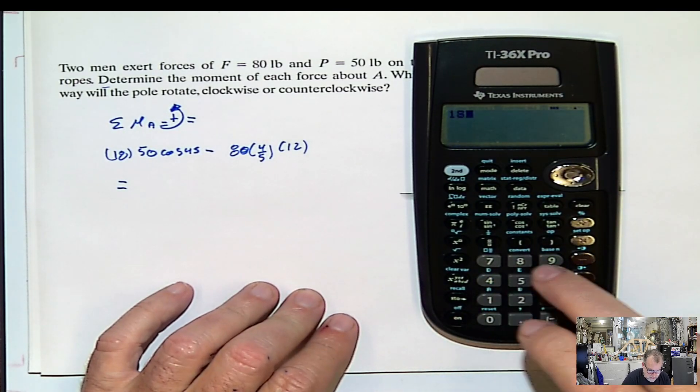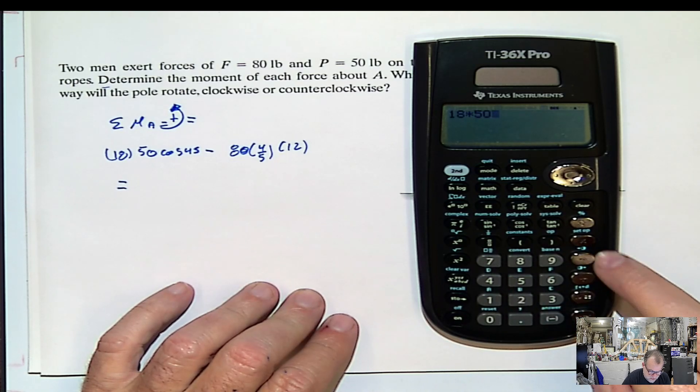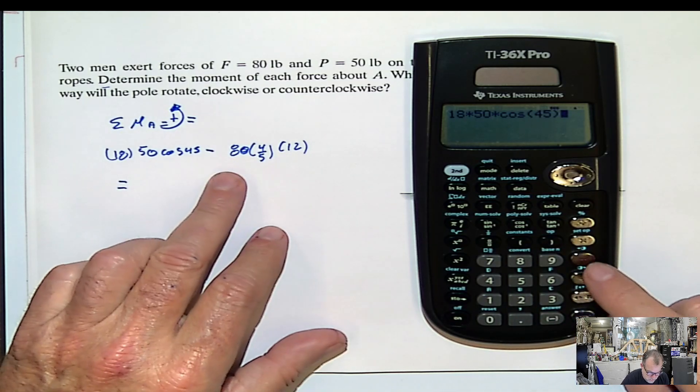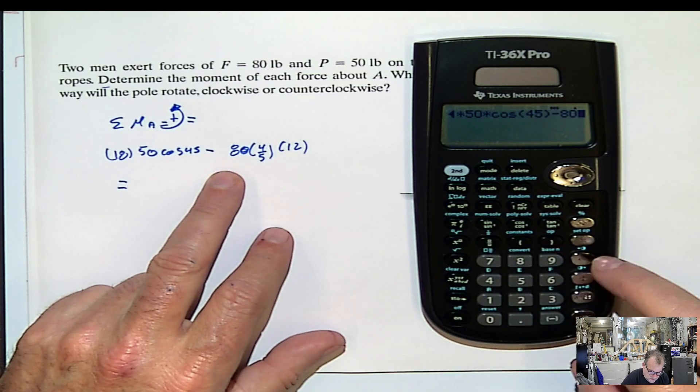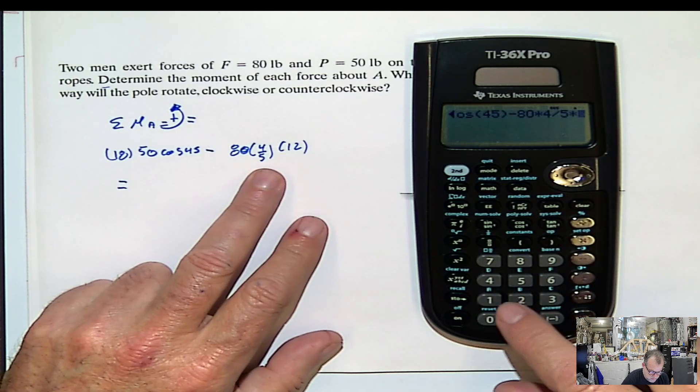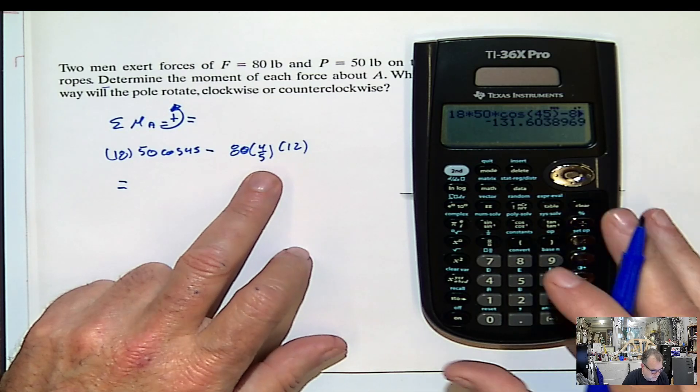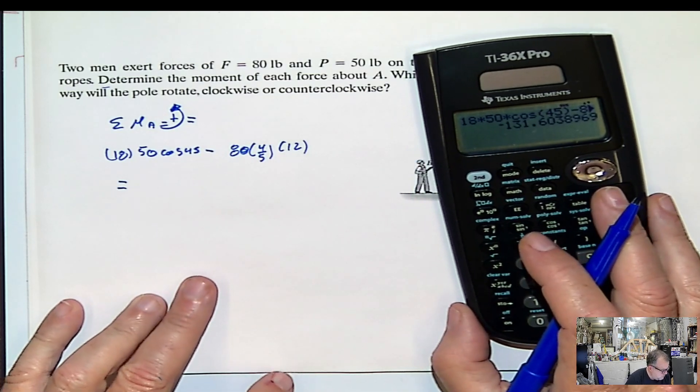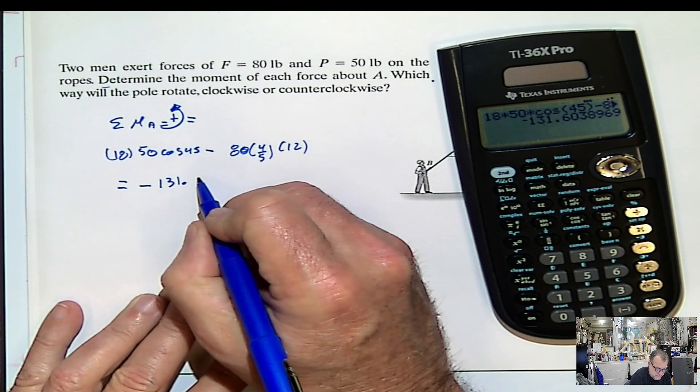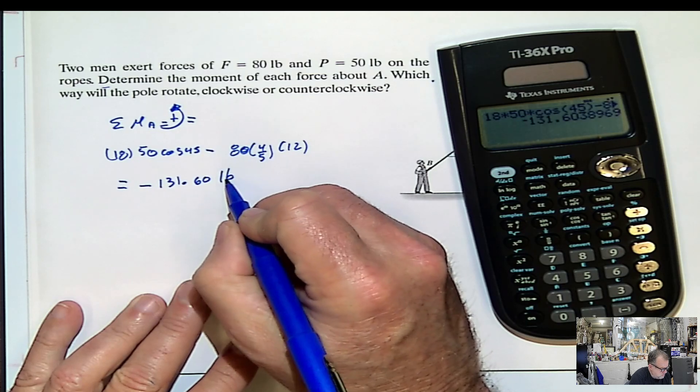18 times 50 times cosine 45 minus 80 times 4 divided by 5 multiplied by 12, and that would be negative 131.60 pounds per foot.